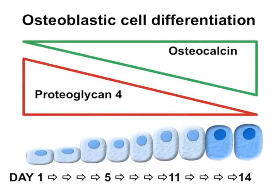Osteoblastic cells in vitro demonstrate the highest PRG4 levels in proliferative cells with decreasing levels as the cells differentiate and express osteocalcin. At all time points, PTH increases PRG4 with maximal fold increases found in the more differentiated cells.